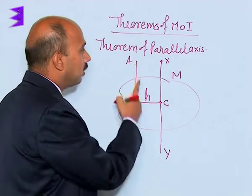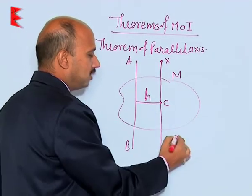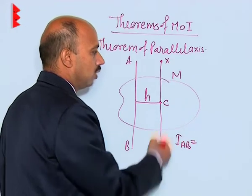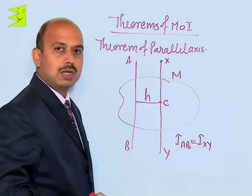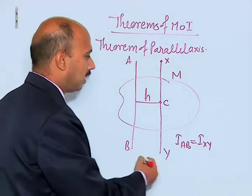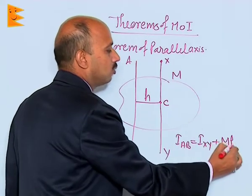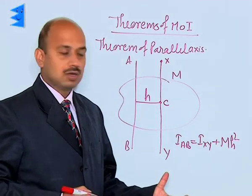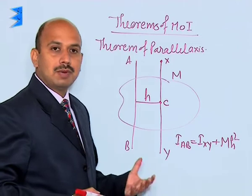So, according to the parallel axis theorem, the moment of inertia about axis A B is equal to the moment of inertia I_XY — that is, the moment of inertia about an axis passing through the center of mass — plus the product of the mass and the square of the perpendicular distance between the two axes. This is the theorem of parallel axis.